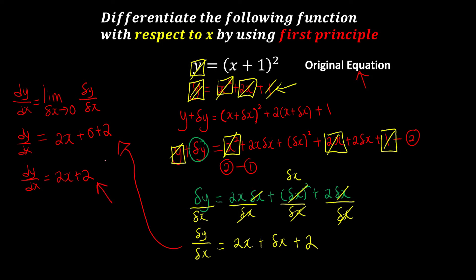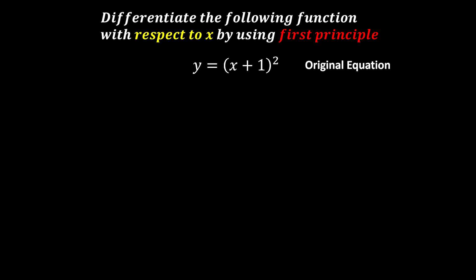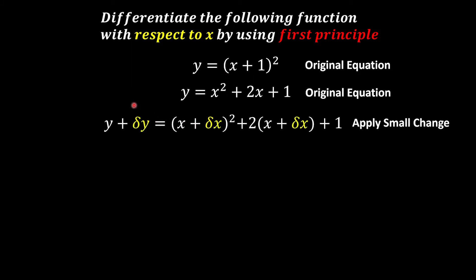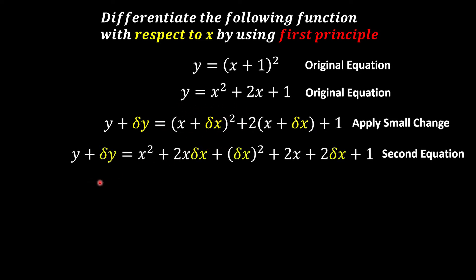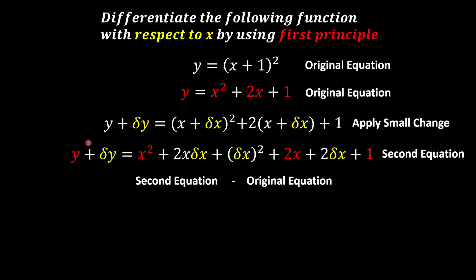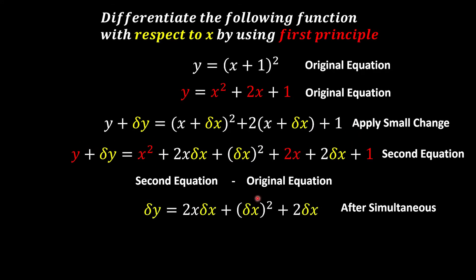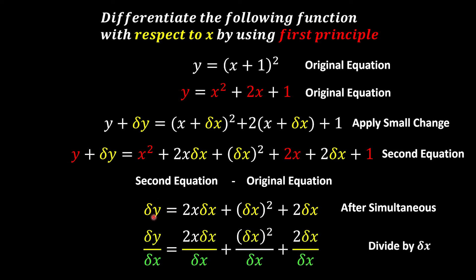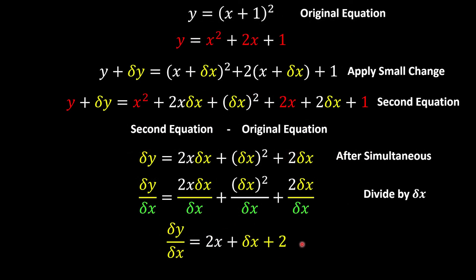And this is our master key. To recap: we started with the original equation, expanded it first to make it easier, then applied a small change for delta y and delta x, and expanded one more time for the bracket. This gave us the second equation. With two equations, we did simultaneous — second equation minus the original — and the like terms disappeared. Then to find delta y over delta x, we divided both sides by delta x, cut off the delta x terms, and simplified.